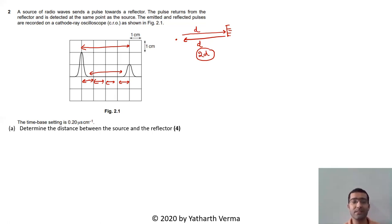So basically the total distance covered is 2d, where d is the distance between the source and the reflector. Radio waves are there, that means their speed is 3 × 10^8 meters per second because these are radio waves. Now how much is the time taken for this distance? The covered distance is 2d.